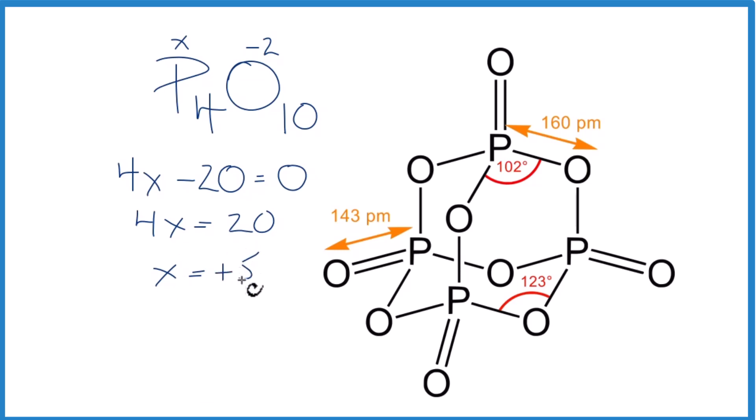So the oxidation number on each one of these phosphorus atoms here is going to be plus 5. And if you look at the structure, all of the phosphorus atoms here are bonded to the same four oxygen atoms. So this is an average oxidation number we found here, but in this case, all of these, since they're the same, the average works. It's plus 5.